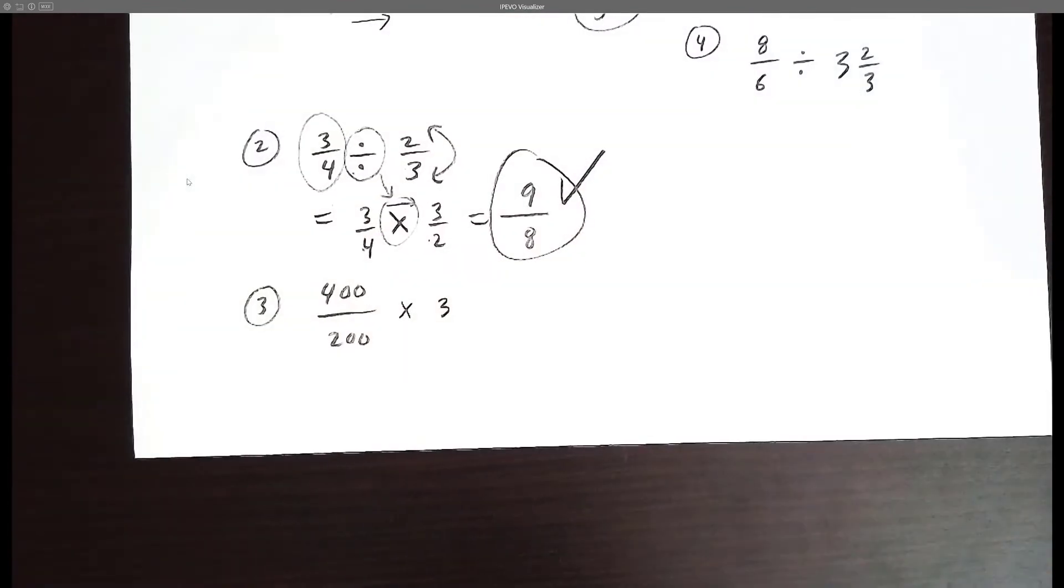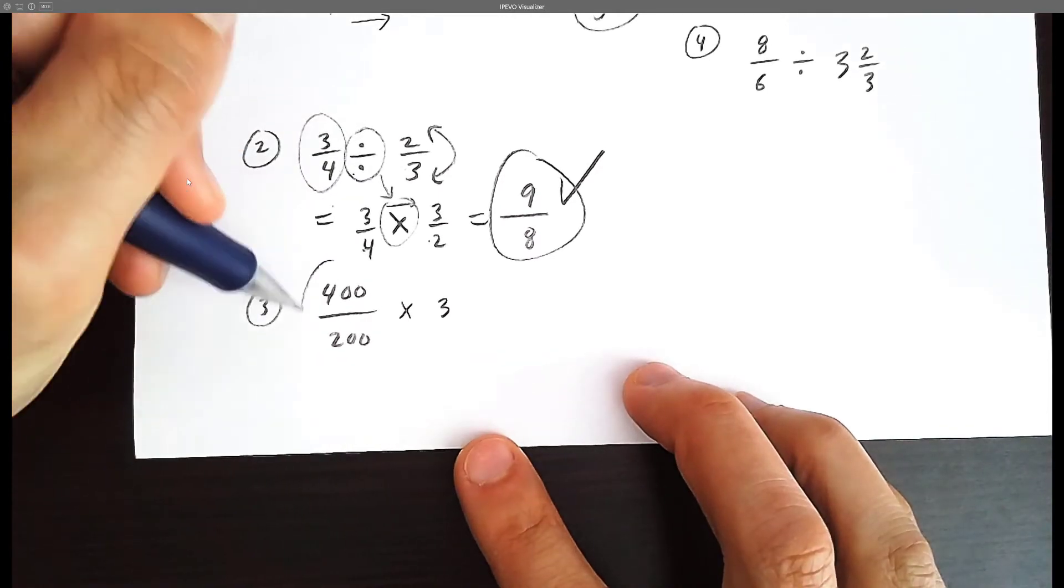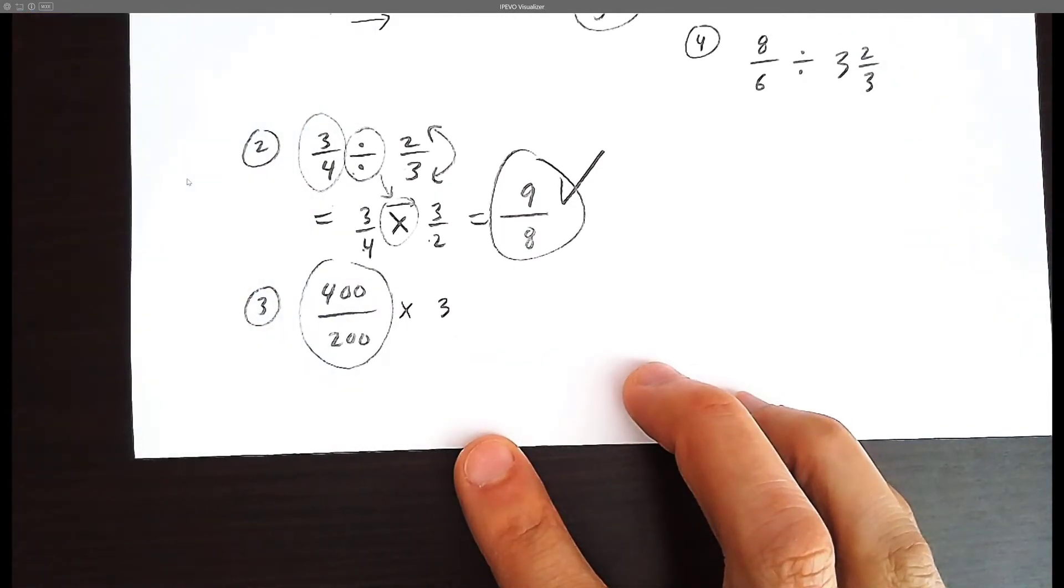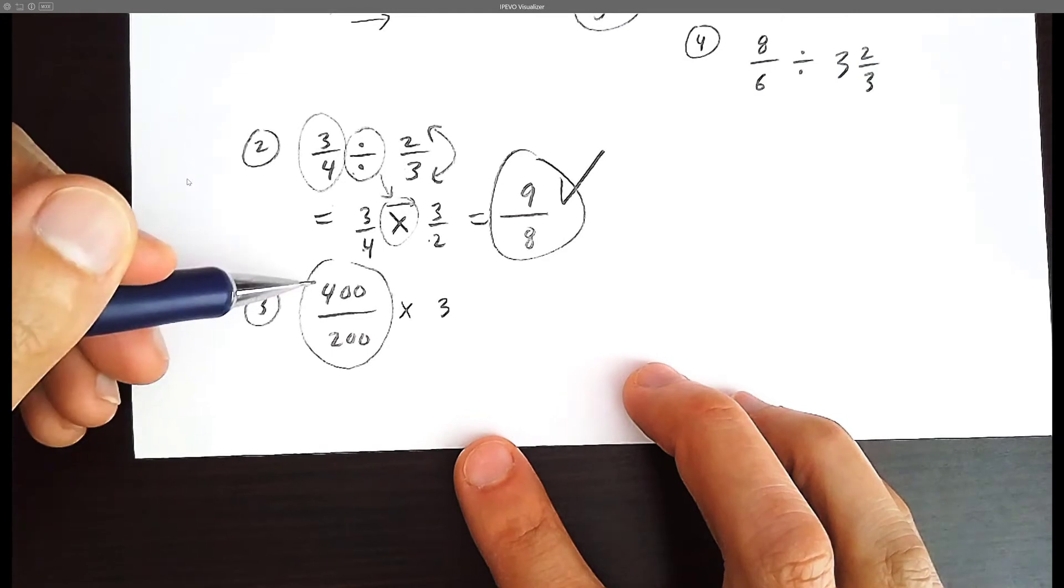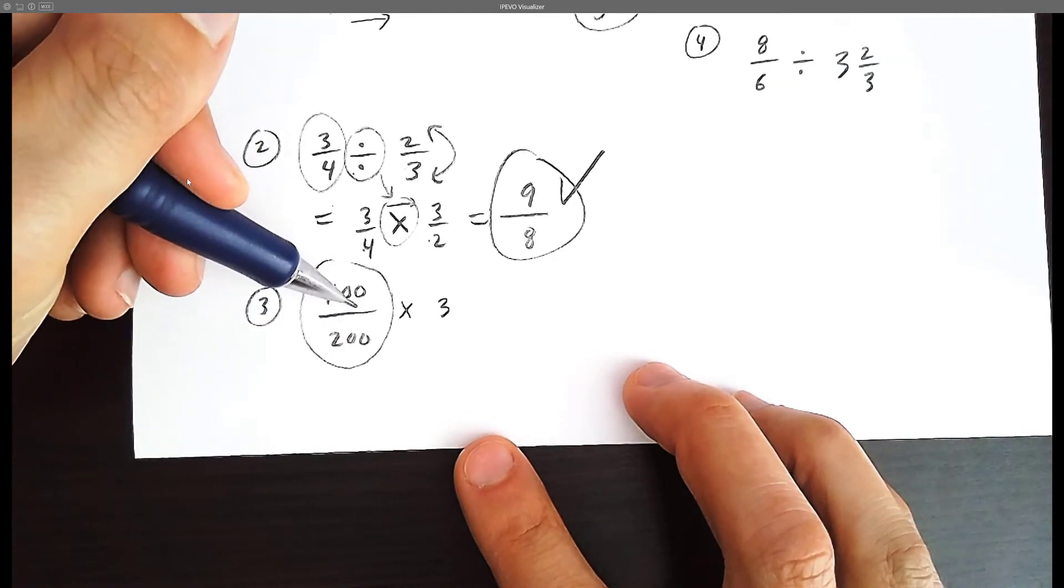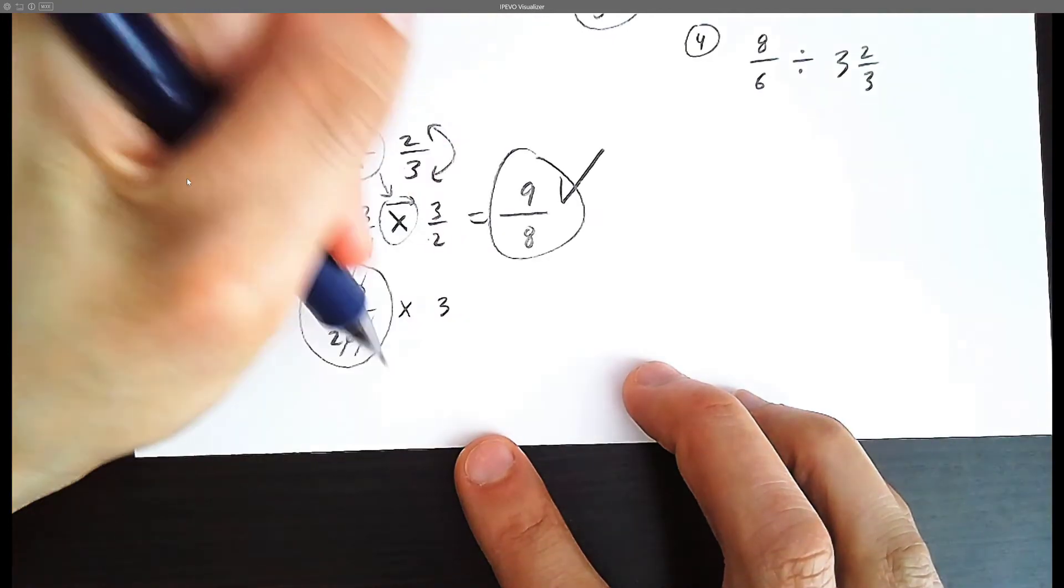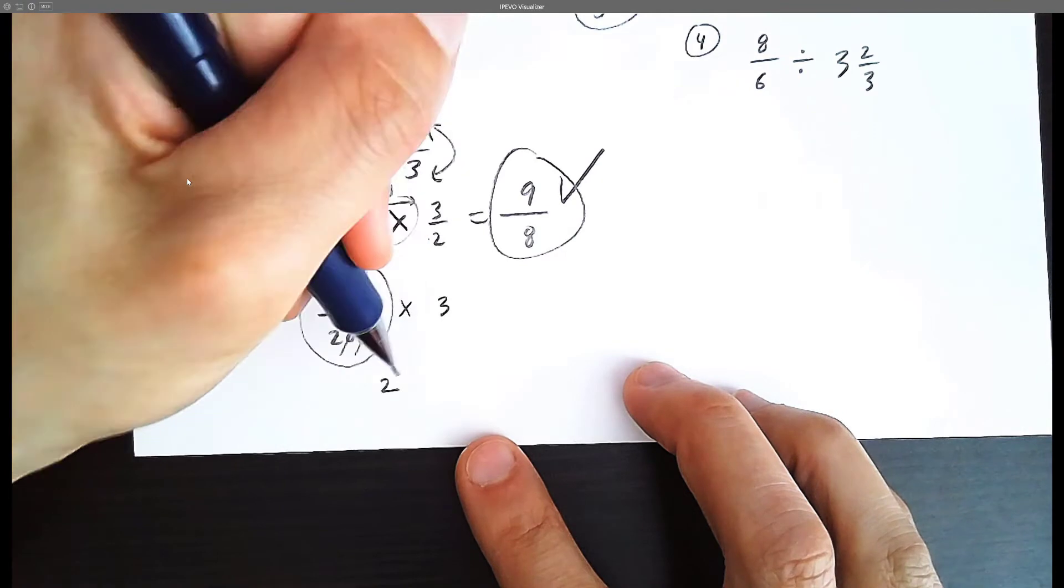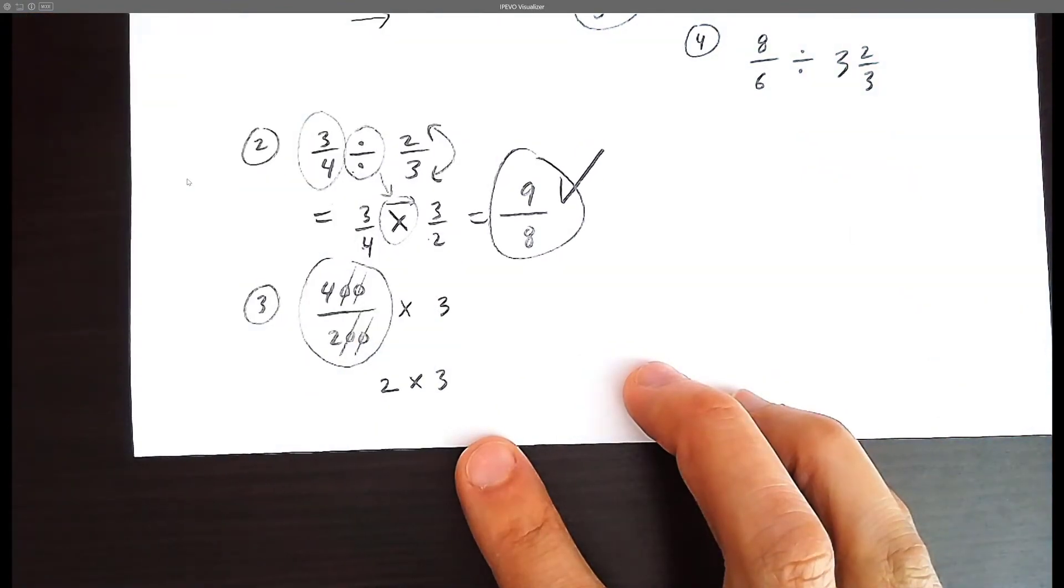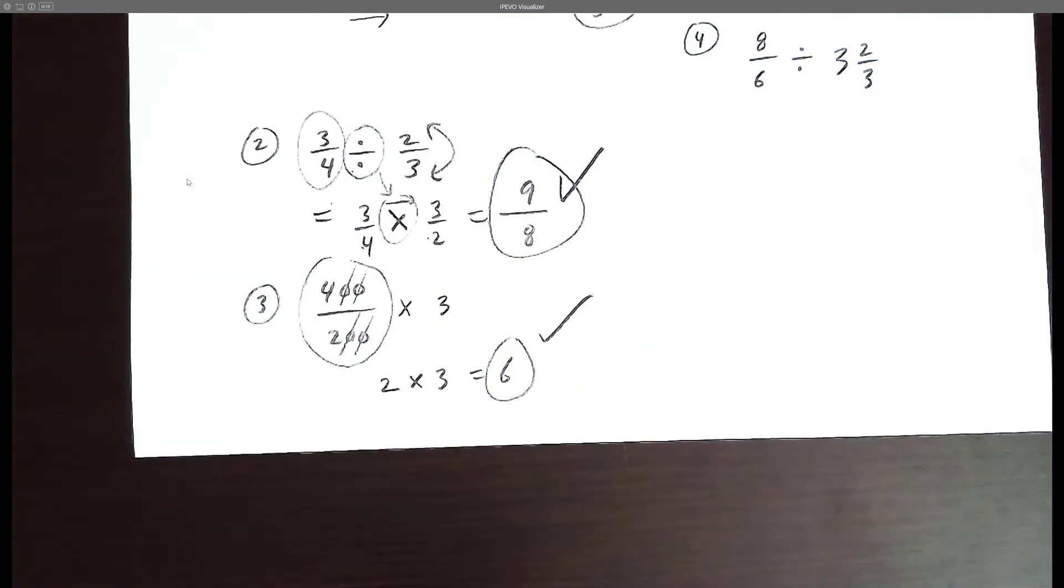Alright, so now let's try number 3. I recommend when you see a fraction like this, try simplifying first. What's 400 divided by 200? You can divide top and bottom by 10 or by 100. These zeros essentially cancel out. 4 divided by 2 is 2. And we have 2 times 3. 2 times 3 is 6. And there's our final answer.